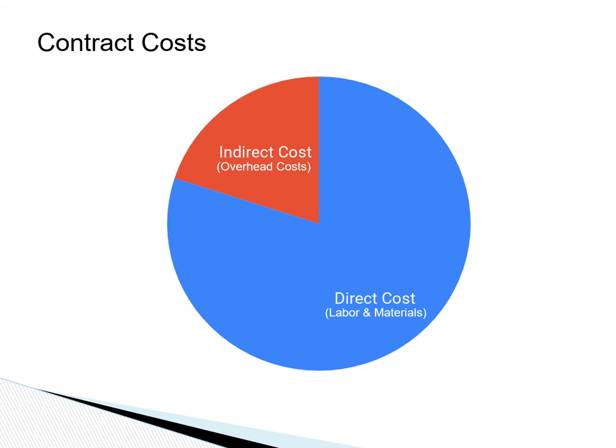When we discuss contract costs, we have to keep in mind that the majority of the cost is direct costs, such as the cost of labor or material. However, there is also an indirect cost associated with management and support indirectly provided to the project. For example, the cost associated with payroll or office space for the contractor project team would be an example of an indirect cost.